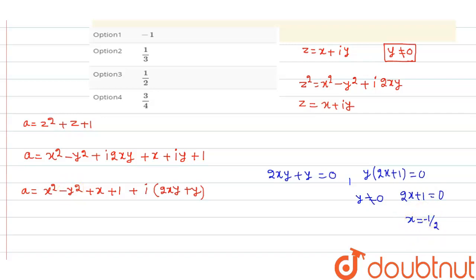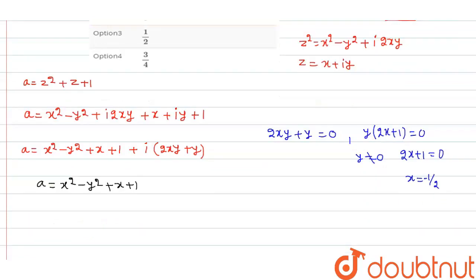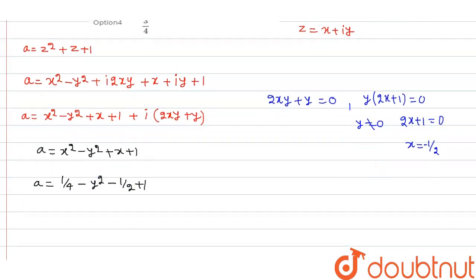Substituting x equals minus one half into the real part expression: a equals x squared minus y squared plus x plus one, which gives one quarter minus y squared minus one half plus one. Simplifying, a equals one half plus one quarter minus y squared, that is three quarters minus y squared.